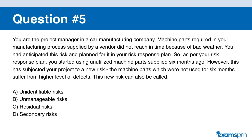Question number five. You are the project manager in a car manufacturing company. Machine parts required in your manufacturing process from a vendor did not arrive in time because of bad weather. You had anticipated this risk and, per your risk response plan, you start using unutilized machine parts supplied six months ago. However, this subjects your project to a new risk because those parts suffer a higher level of defects. The new risk can also be called: A: unidentifiable risk. B: unmanageable risk. C: residual risk. D: secondary risk.